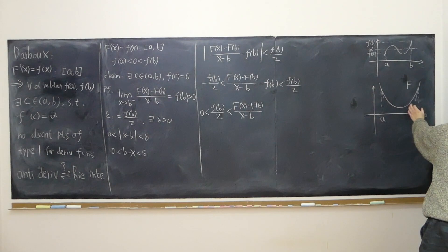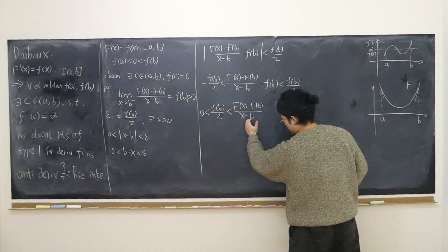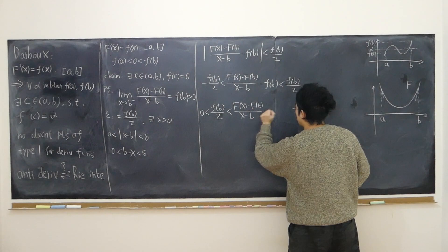Since x is approaching from the left-hand side, x − b is always negative, so the denominator is always negative. Since the whole fraction is positive, the numerator must also be negative. Therefore, F(x) is less than F(b) for x near b from the left.